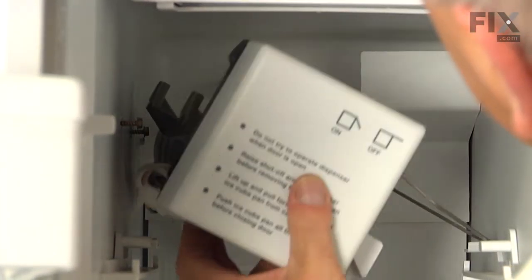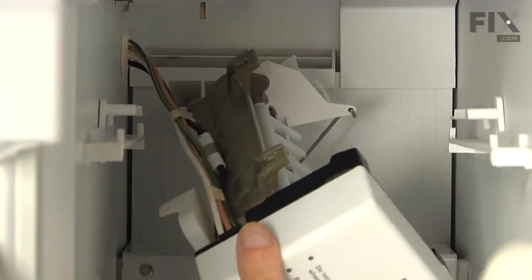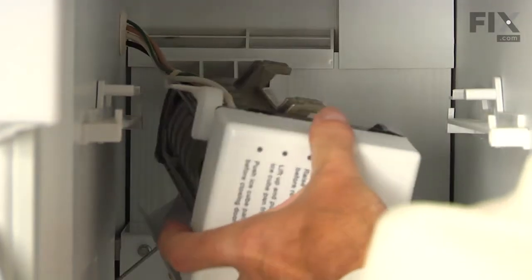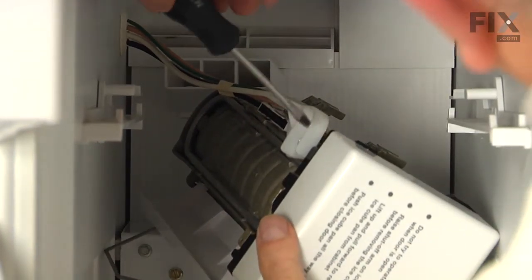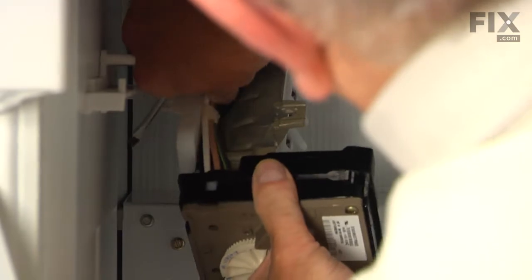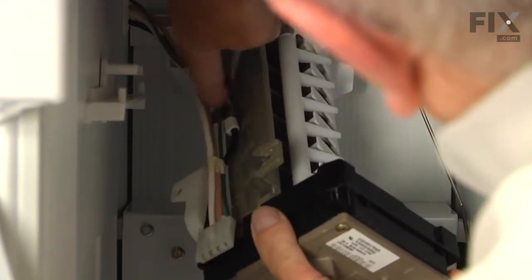Now with the ice maker pulled away from the mounting screws on the side, we'll next need to disconnect the wire harness to it. Now if your model has an inline wire harness, we simply need to depress the locking tab on the connector and separate them. However, if it connects directly into the ice maker head, you'll need a flat blade screwdriver to slide in that little slot, depress that locking tab, and then pull the harness completely out of the ice maker.